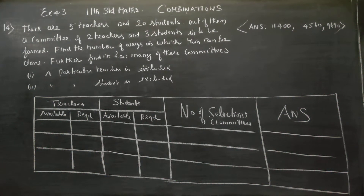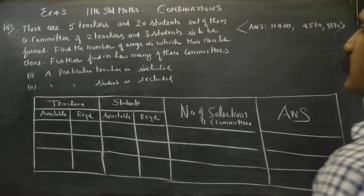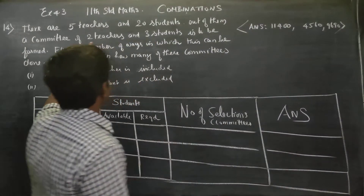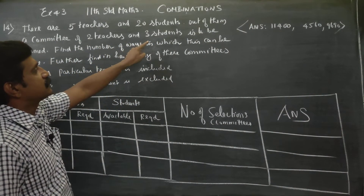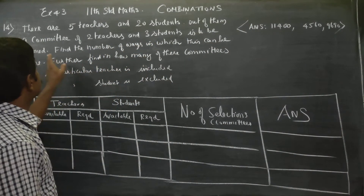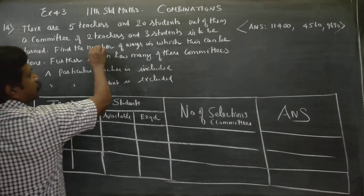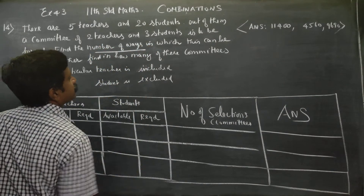Hello 11th standard students. There are 5 teachers and 20 students. Out of them, a committee of 2 teachers and 3 students is to be formed. Find the number of ways.